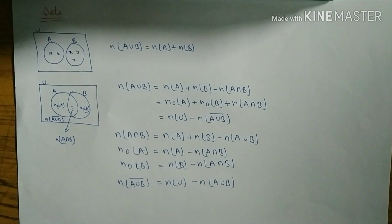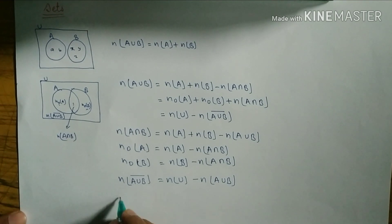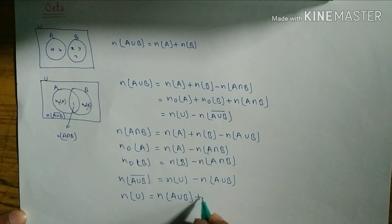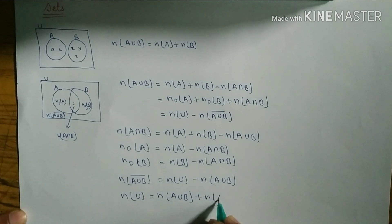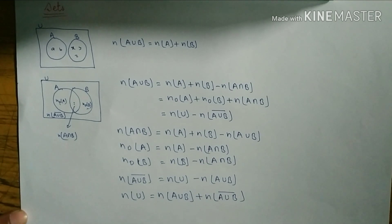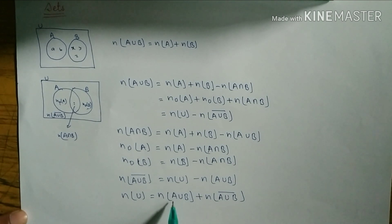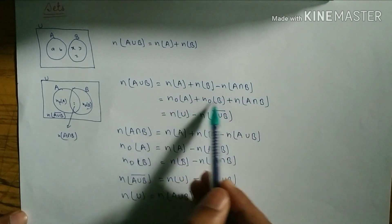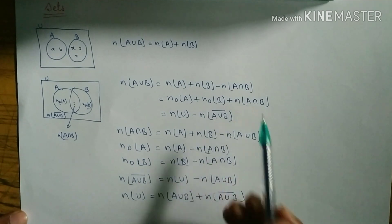Similarly, we can also write the formula for n(U): n(U) is equal to n(A∪B) plus n(A∪B)'. You can substitute the respective formulas for each of these terms as needed.